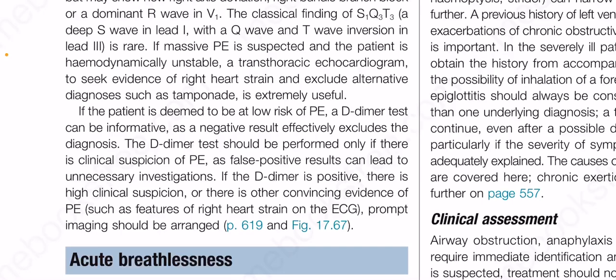An ECG in the context of massive pulmonary embolism most commonly reveals only a sinus tachycardia but may show new right axis deviation, right bundle branch block or a dominant R wave in V1. The classical finding of S1Q3T3 — a deep S wave in lead 1 with a Q wave and T wave inversion in lead 3 — is rare. If massive pulmonary embolism is suspected and the patient is hemodynamically unstable, a transthoracic echocardiogram to seek evidence of right heart strain and exclude alternative diagnoses such as tamponade is extremely useful. If the patient is deemed to be at low risk of pulmonary embolism, a D-dimer test can be informative as a negative result effectively excludes the diagnosis. The D-dimer test should be performed only if there is clinical suspicion of pulmonary embolism, as false positive results can lead to unnecessary investigations. If the D-dimer is positive, there is high clinical suspicion, or there is other convincing evidence of pulmonary embolism such as features of right heart strain on the ECG, prompt imaging should be arranged.